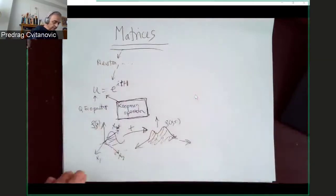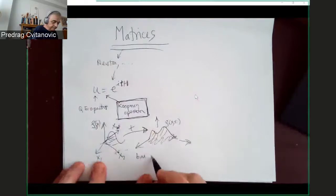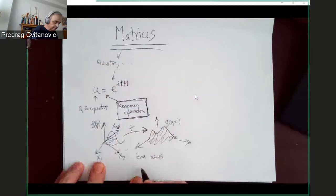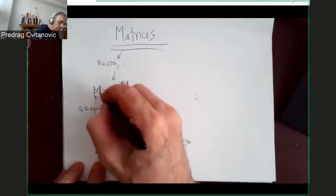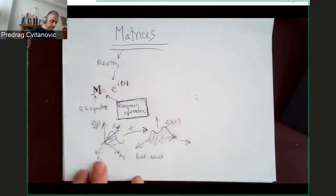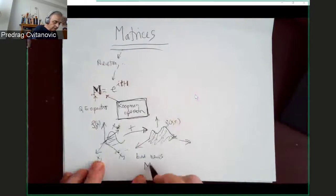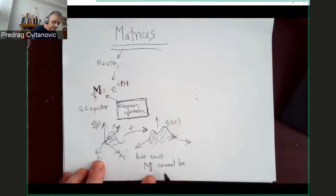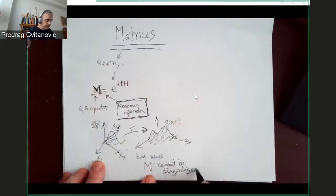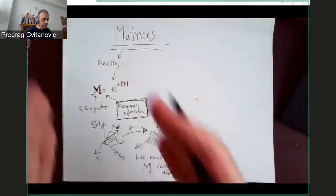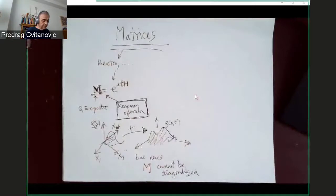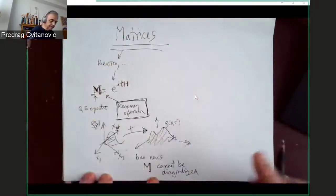Now, bad news. In general, so let's call this matrix M, whenever we put it on computer, we put finite number of degrees of freedom, so it's not a function anymore. Bad news is that in general, M cannot be diagonal. So, lots of nature is described this way, but it's subtle, difficult, and something.